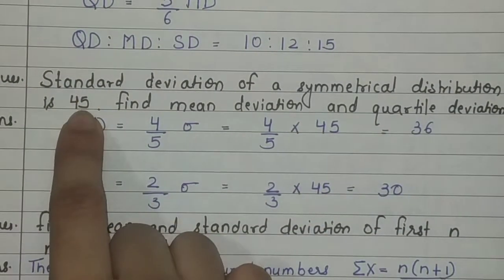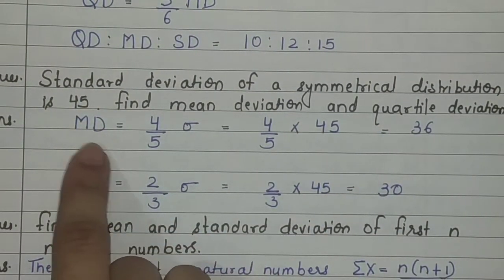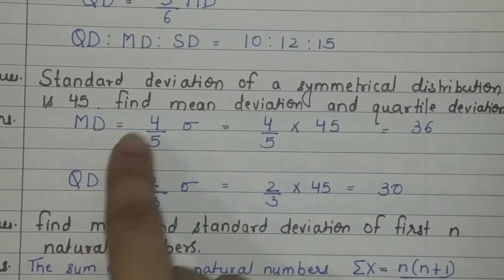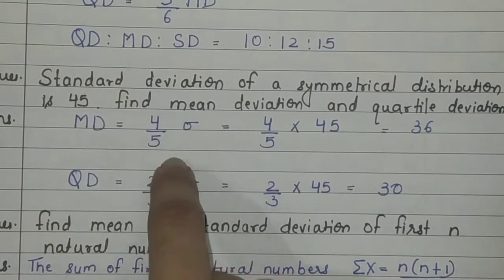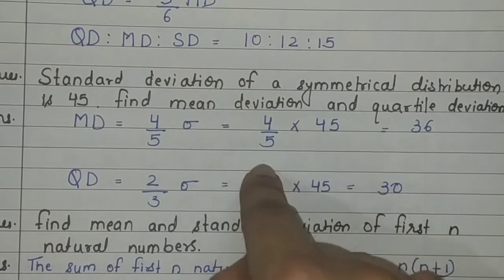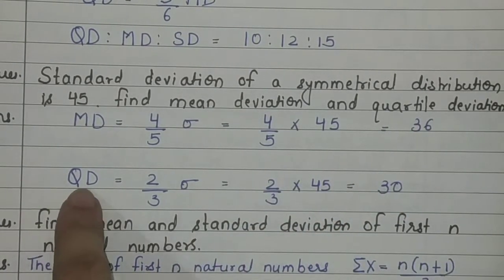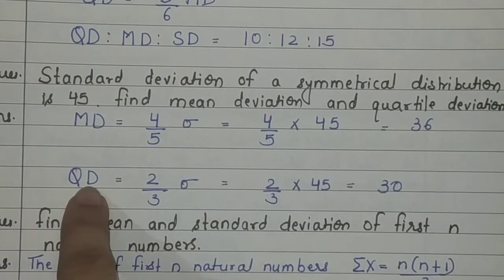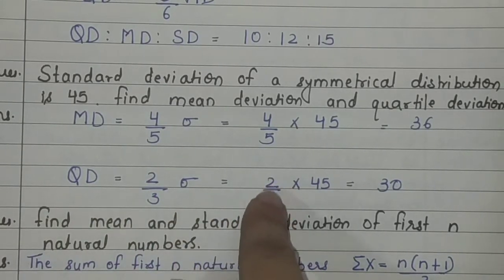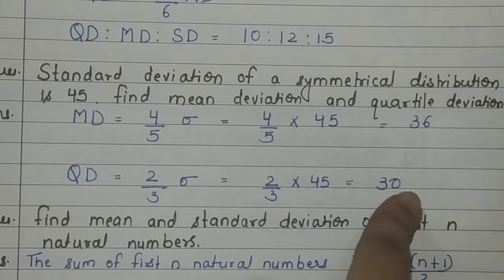If standard deviation is 45, then: Mean deviation = 4/5 of standard deviation = 4/5 × 45 = 36. And Quartile deviation = 2/3 of standard deviation = 2/3 × 45 = 30.